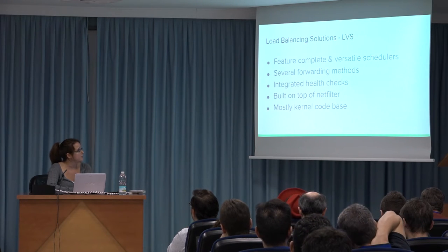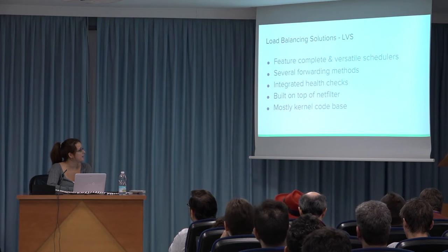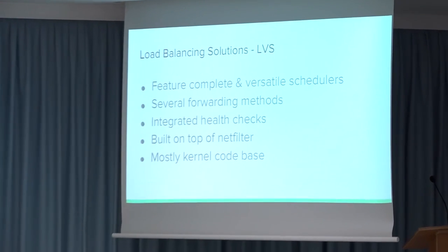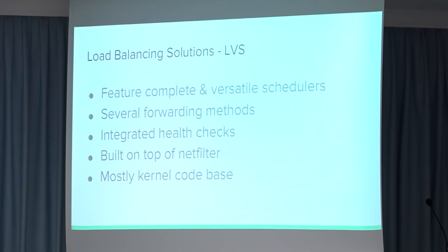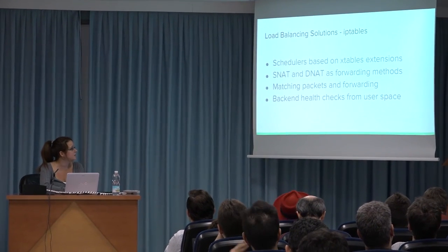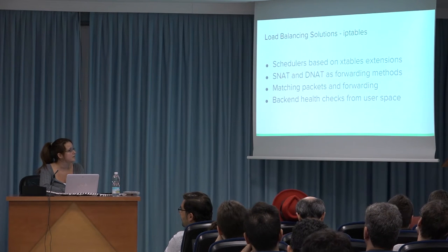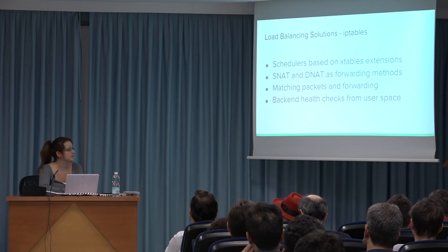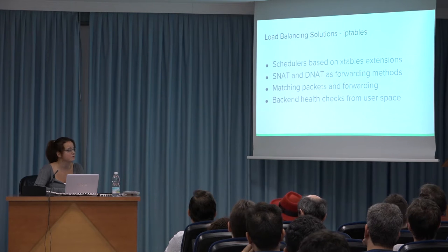Giving just a brief review of LVS: LVS provides a rich set of complete versatile schedulers. It provides several forwarding methods — tunnelling, SNAT, or direct routing. It also provides integrated health checks. It's implemented in another layer on top of NetFilter, and it's mostly a kernel code base. With IP tables, we could provide a load balancer using extensions — X table extensions. We could set forwarding methods as SNAT or DNAT, depending on the transparency we want to use.